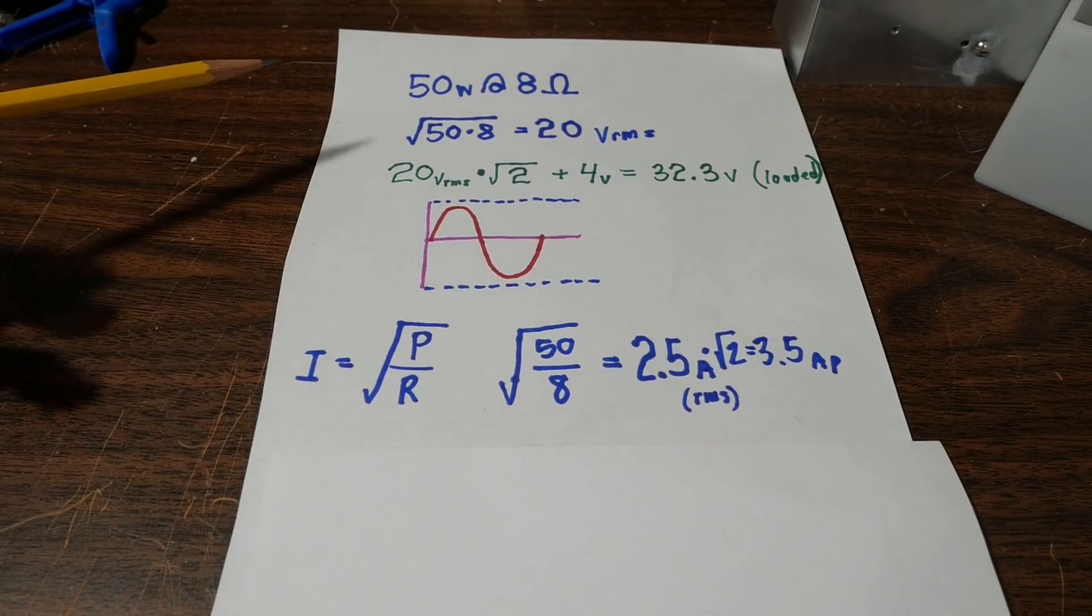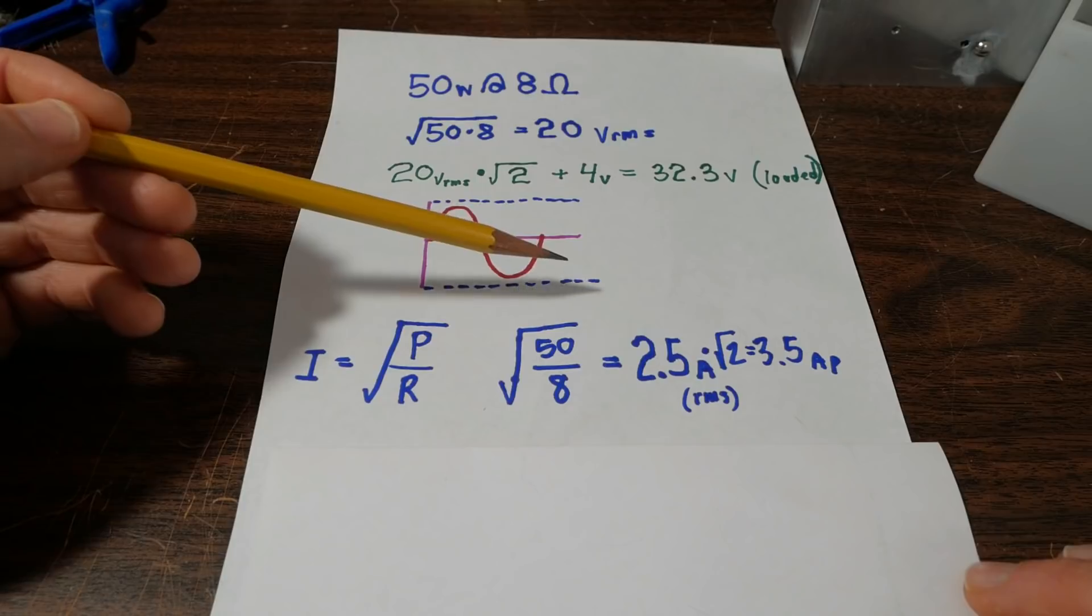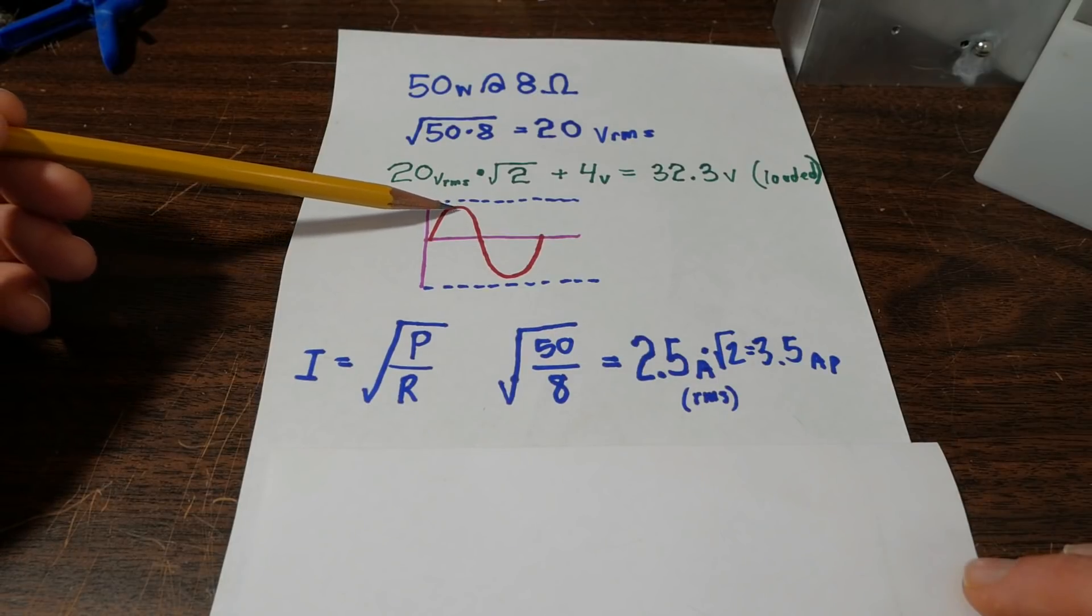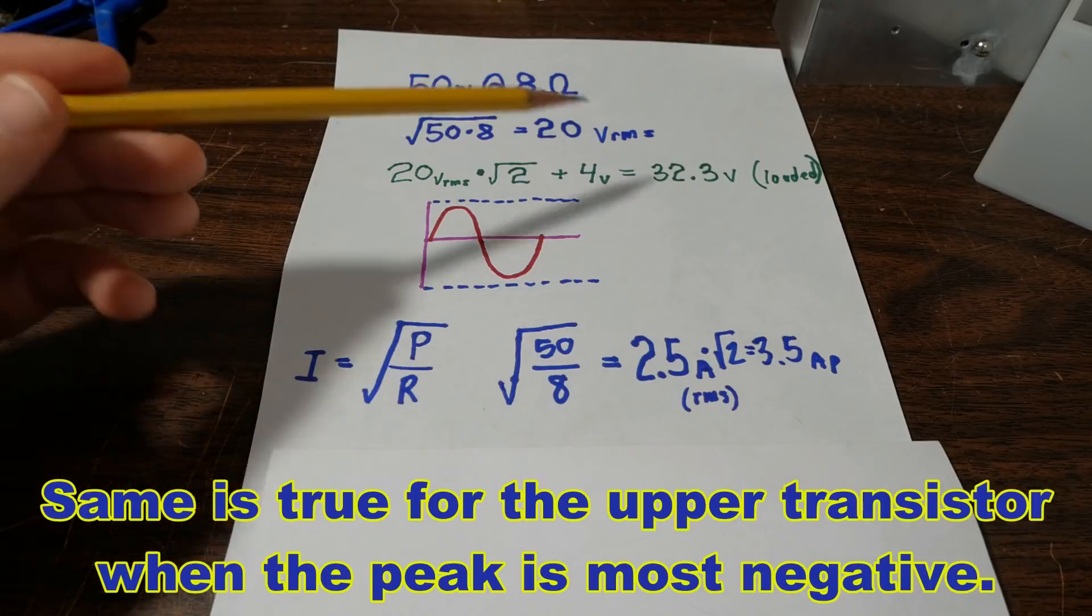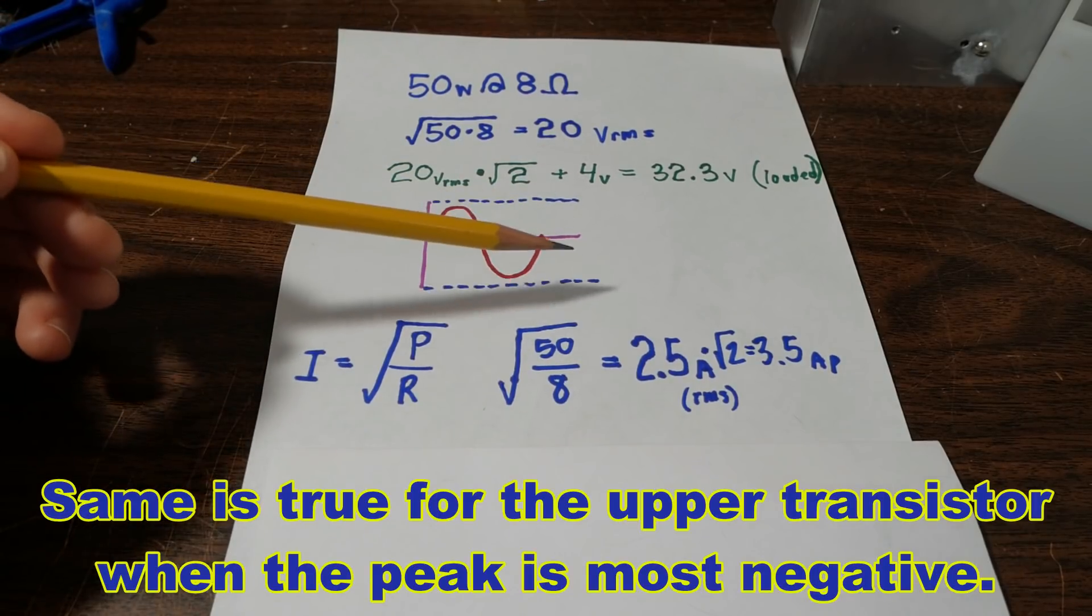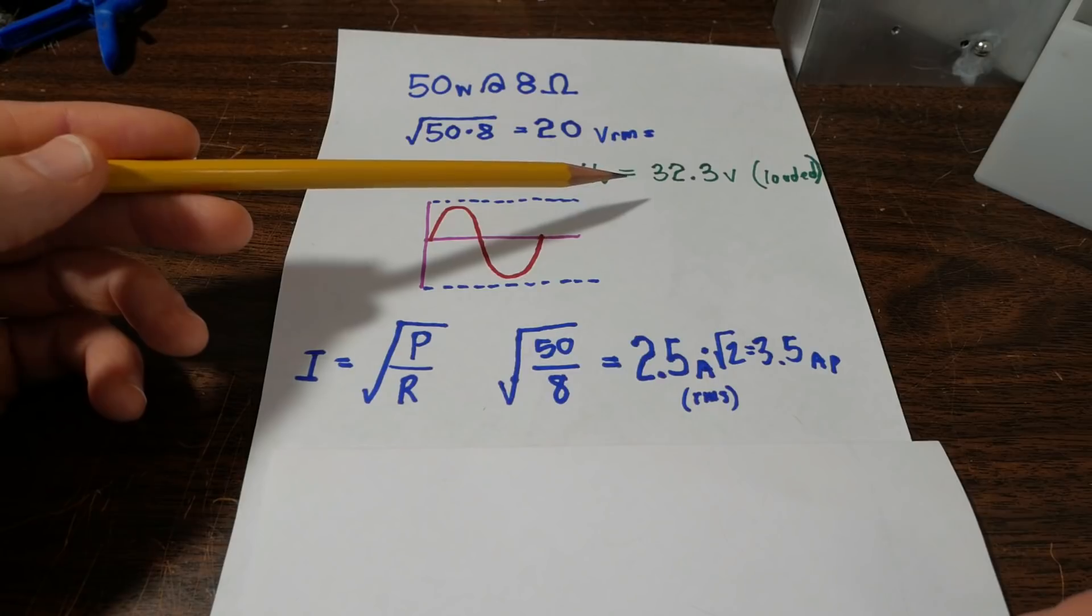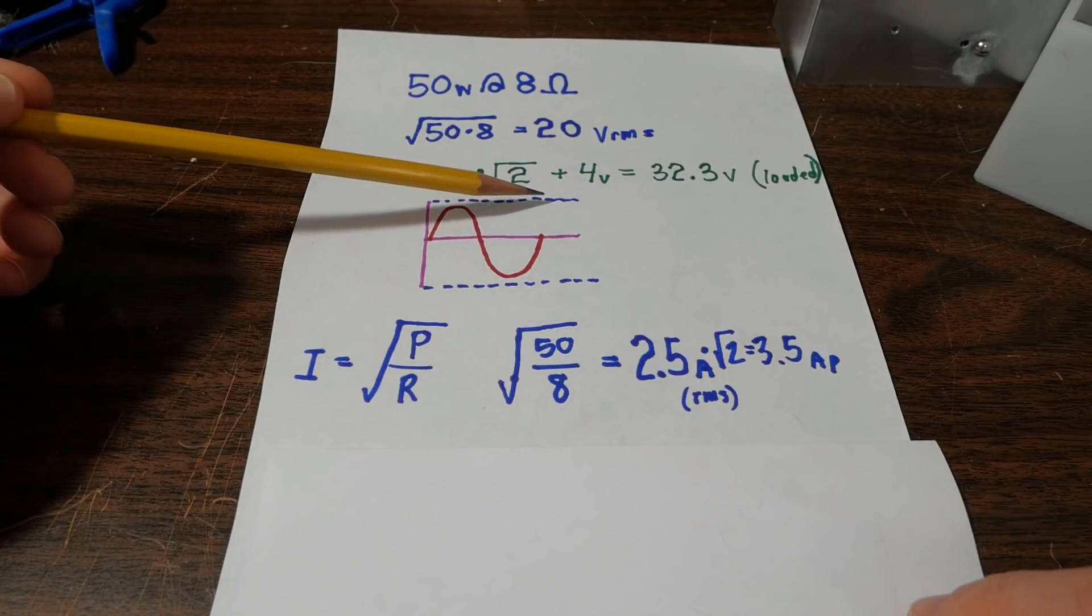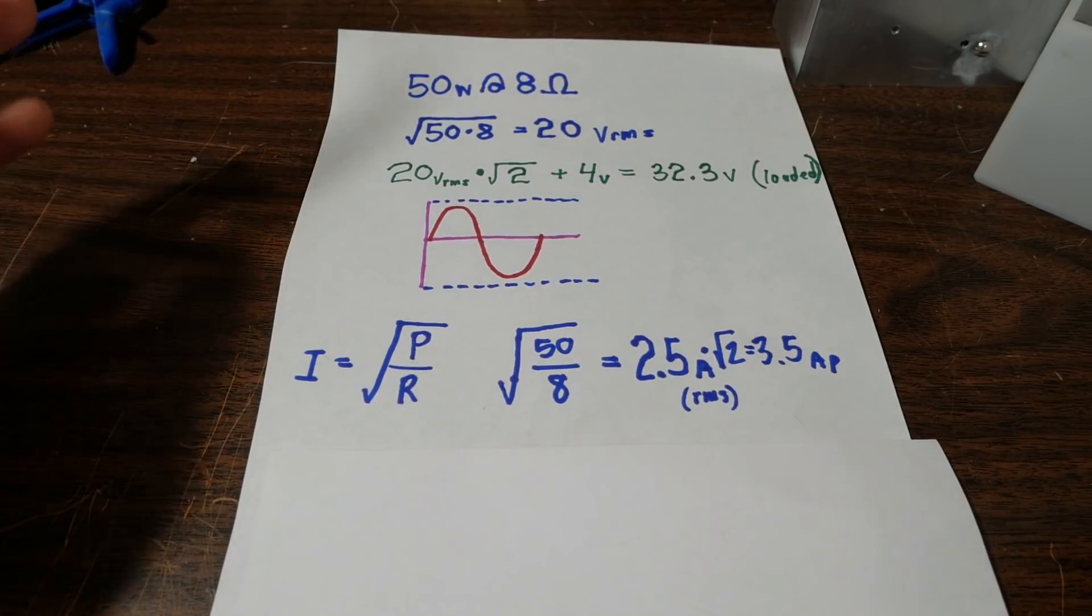Okay, so what about transistor voltage? Well, you have to look at it this way. When the output is at its most positive peak, the lower output transistor, this is a push-pull stage with two transistors. It's going to see from almost the positive supply rail to the negative supply rail across it. So we need to make sure we have a transistor that can handle that. So, oh my god, the cat's running, the cat's going crazy running back and forth. But anyway, unloaded, this is 36 volts.